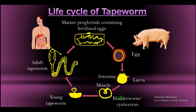When man eats an undercooked pork meat that contains the bladderworm, the bladderworm is automatically taken into the body of man, which then develops into the young tapeworm. After some time, it grows back to the adult tapeworm and then attaches itself to the wall of the small intestine of man.